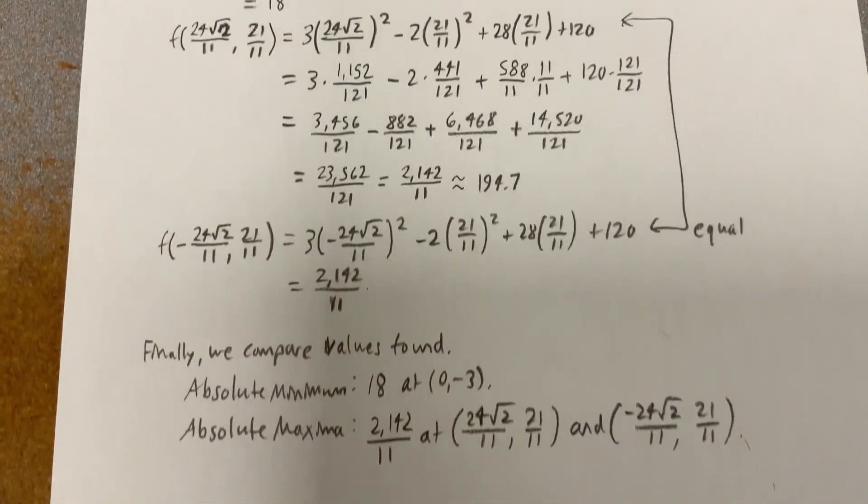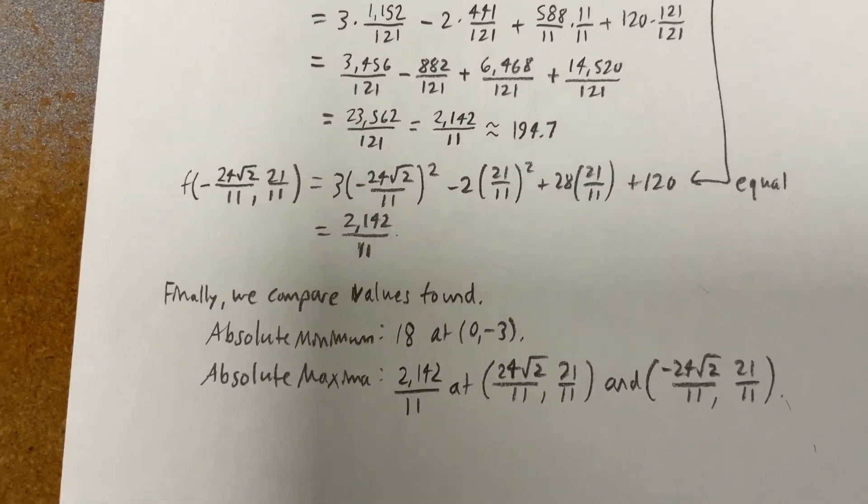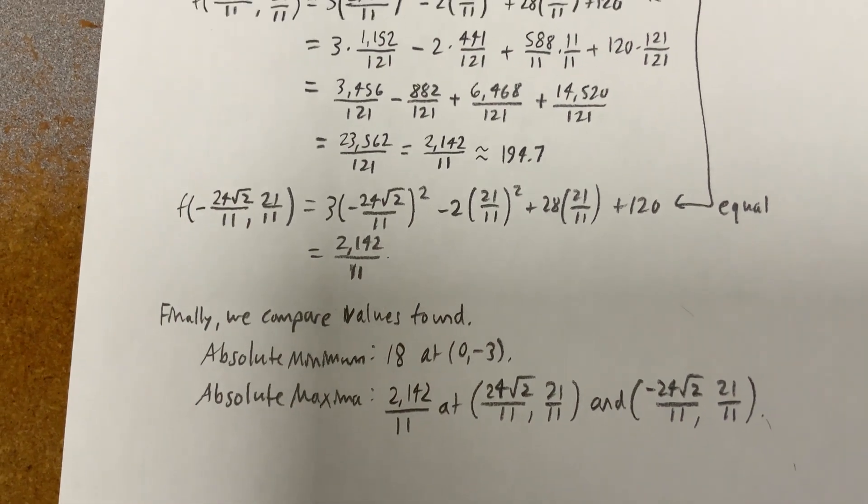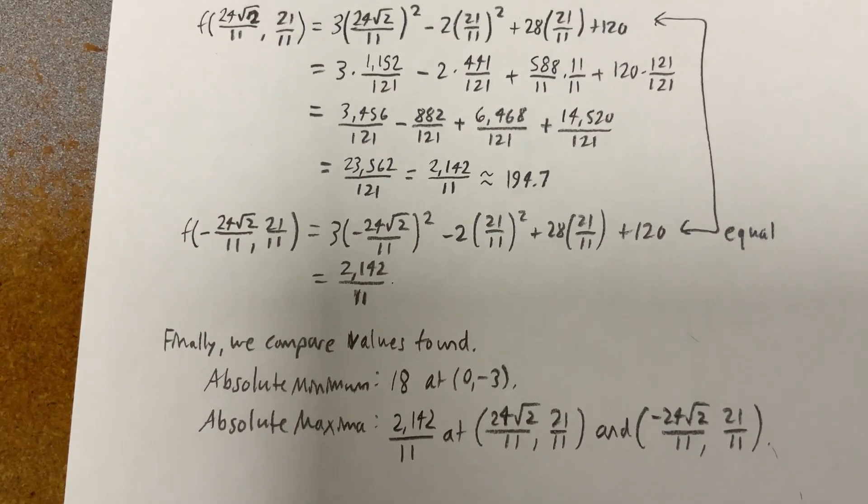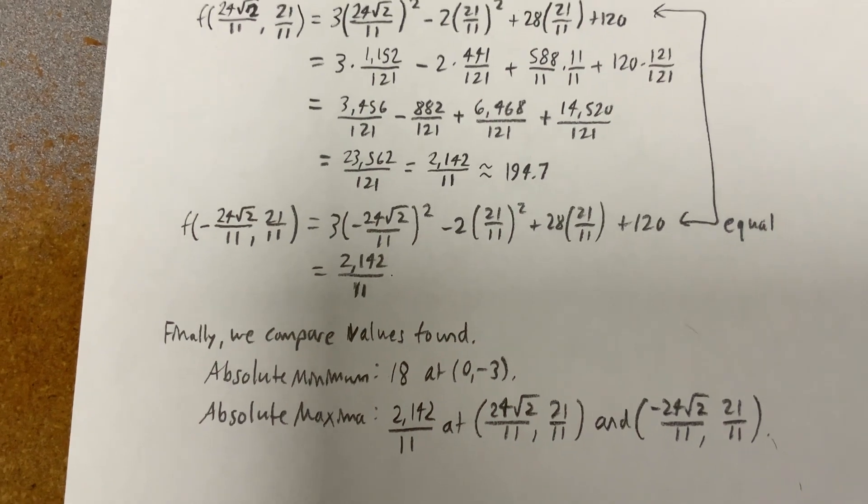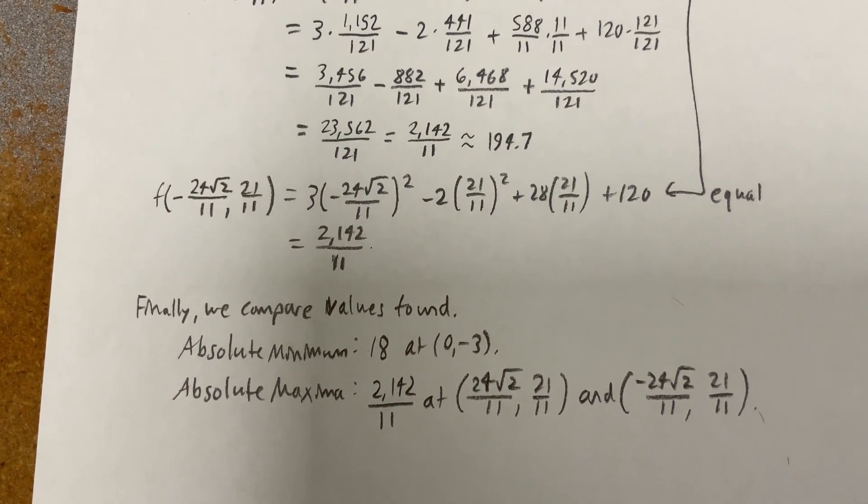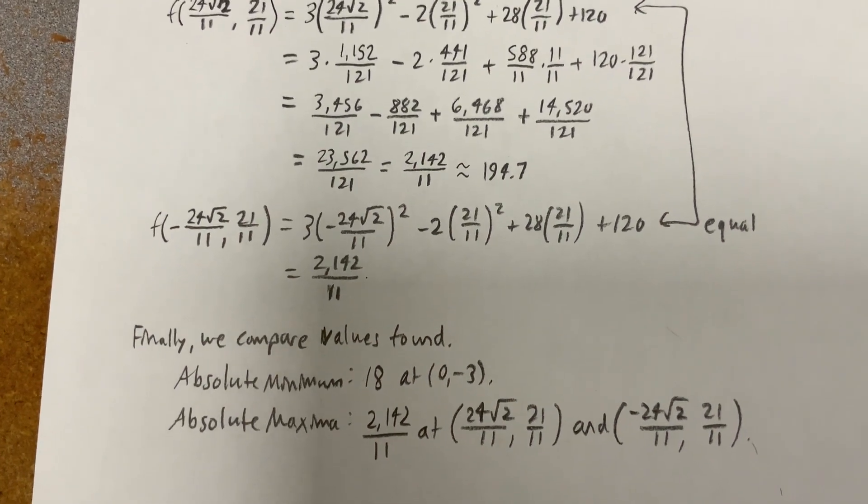And so finally, we compare the values found. The absolute minimum will be 18 at (0,-3). And the absolute maxima, 2,142/11, occurs at plus or minus 24√2/11, comma 21/11.